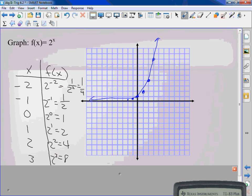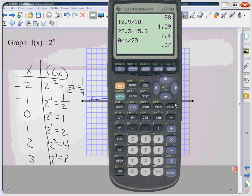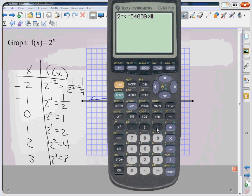It will never hit zero because if I had two to the... Give me a really, really, really big negative number. Negative 54 thousand.